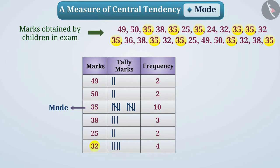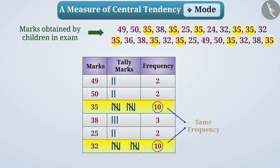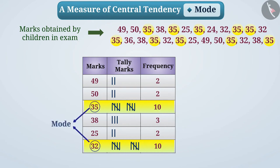Suppose there were 6 more children who got 32 marks. Then the number of children who got 32 marks would be 10, equal to the number who scored 35 marks. In this way, there would be 2 observations with the same highest frequency, giving us 2 modes. Hence, modes can be more than 1.